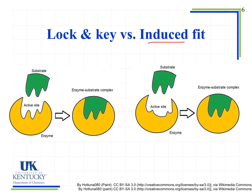Think of the induced fit model like a knit glove — it looks like the shape of a hand but isn't the shape of your hand specifically. When you pull it on, the glove takes the exact shape of your hand. So lock-and-key means an exact match between active site and substrate; induced fit means an approximate match where the active site adjusts its shape to match the substrate as it comes in.